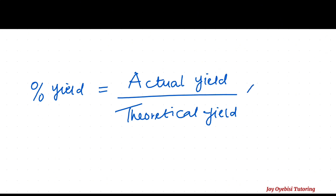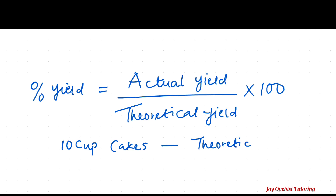Times 100. Now, what is actual yield and what is theoretical yield? I'm going to use cooking as an example. For example, you want to make cupcakes, and you go online and search up a recipe. The recipe says that if you go through every step, you're going to make 10 cupcakes of a particular size. This 10 cupcakes is what we call theoretical yield — it is theoretical because the recipe says that's what you're going to get, but you have not done it so you're not sure if that is what you will get.